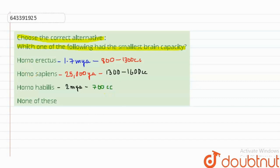Now if we see from the increasing order, Homo habilis will have the smallest brain capacity. In the increasing order of the smallest brain capacity, Homo habilis would be the right answer. I hope this answers your query. Thank